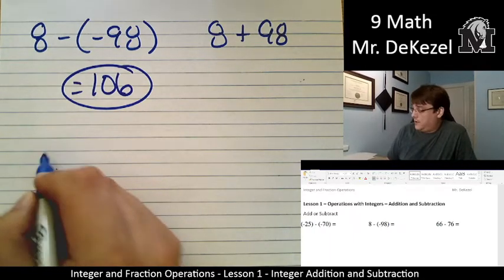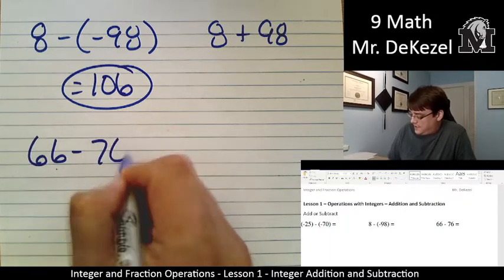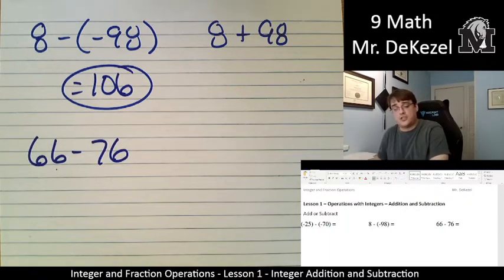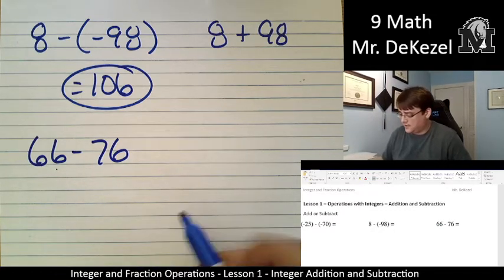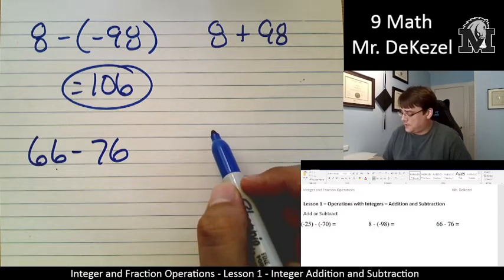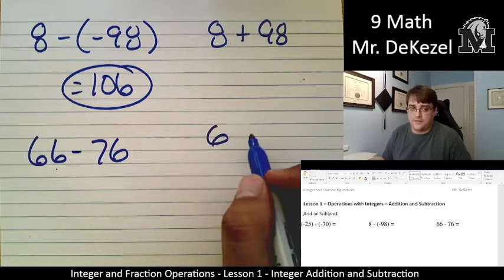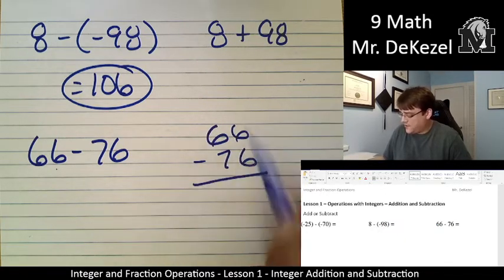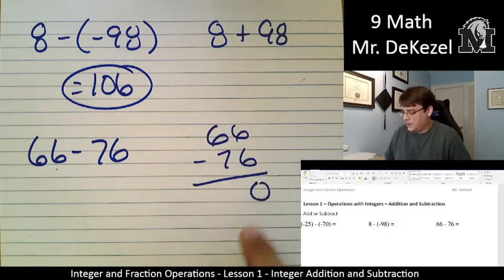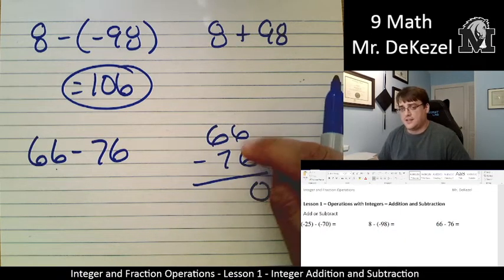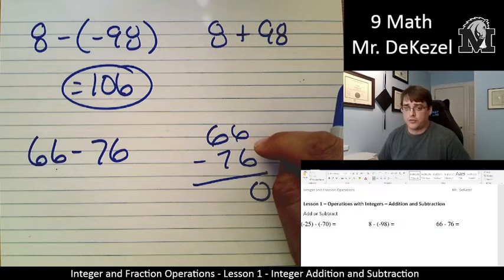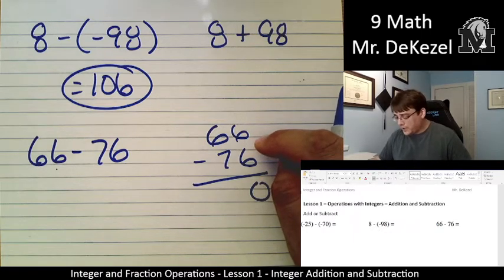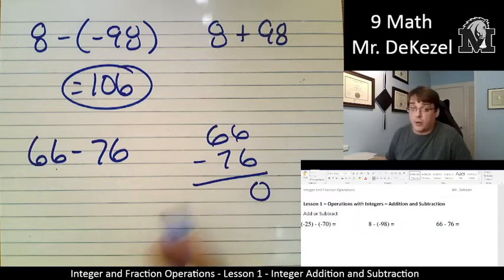Let's do another one. We have 66 minus 76. And this one's a little bit tricky, actually, because we're going to be moving into the negative side. And there is really no good way to stack these on top of each other and subtract them. For example, we have 66 on top minus 76. The first is okay. 6 minus 6 is 0. But we can't subtract 7 from 6. And we have nothing to borrow from. So it's really important that we recognize where we are in the number line and where we're going.